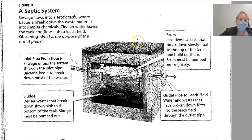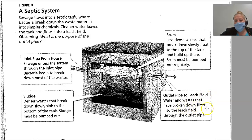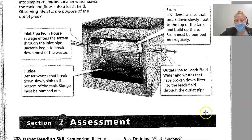Here is a septic tank diagram. Sewage flows into the septic tank where bacteria break down waste materials into simpler chemicals, and cleaner water leaves the tank and flows into the leach field. Sewage enters through the inlet pipe from the house, and bacteria begin to break down the waste. Sludge — denser waste that breaks down slowly — sinks to the bottom of the tank and must be pumped out. Scum — less dense waste that breaks down slowly — floats to the top of the tank and must also be pumped out regularly. Through the outlet pipe, water and waste that has broken down filter into the leach field.